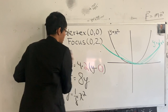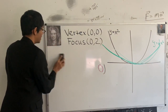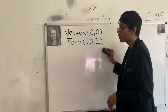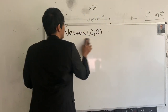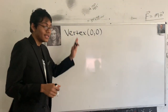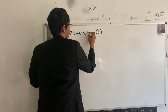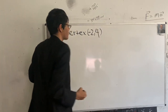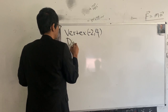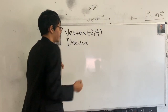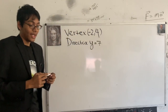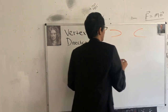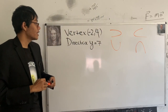Let's look at our next example. This time we're not going to be given the focus; we're still going to be given a vertex, but a different piece of information. Our vertex is going to be at (−2, 4), and we're also going to be given the directrix: y = 7. Our common sense check: is the parabola left, right, up, or down?